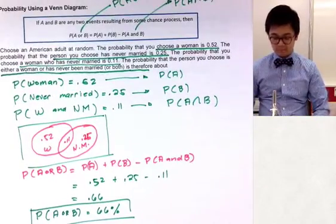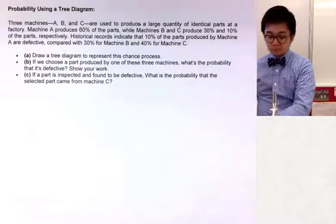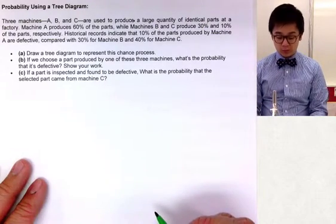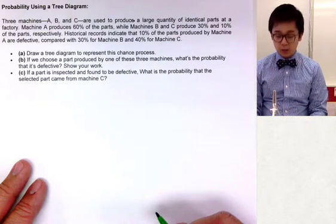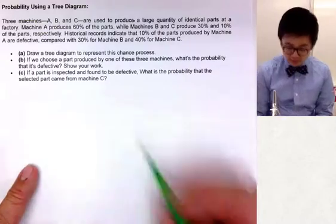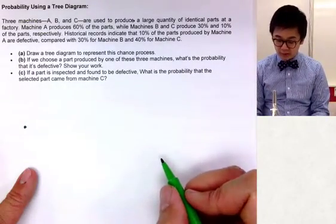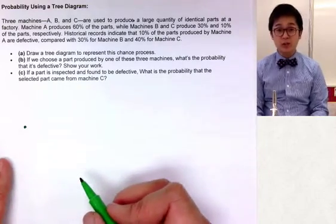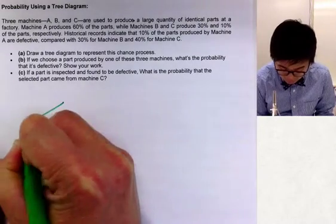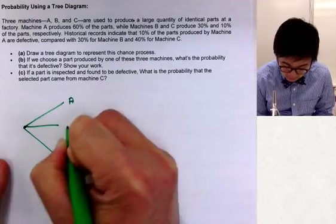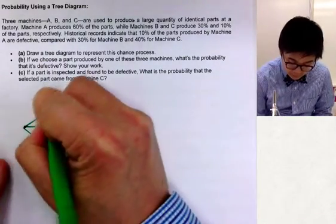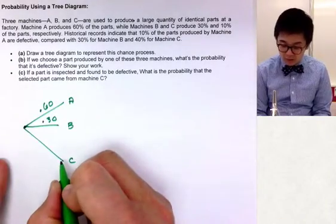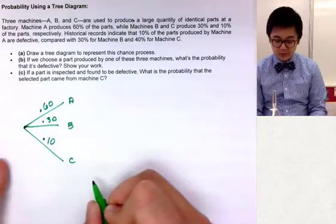For the last part, we're going to use a tree diagram. There are three machines — A, B, and C — that produce a large quantity of identical parts at a factory. Machine A produces 60% of the parts, B produces 30%, and C produces 10%, totaling 100%. We draw three branches for machines A, B, and C.